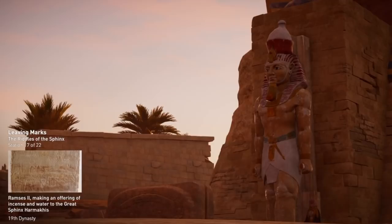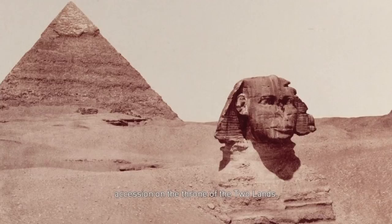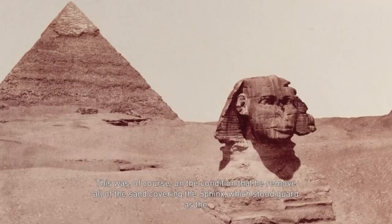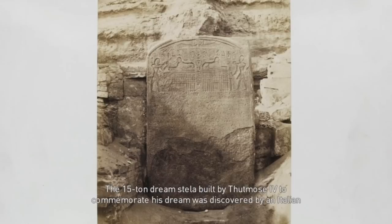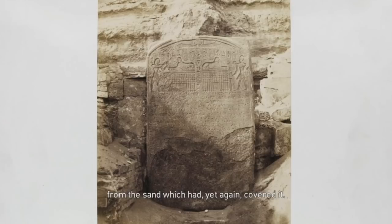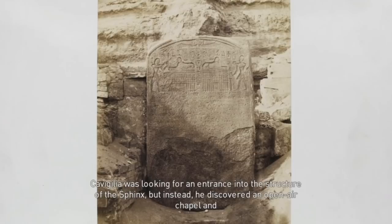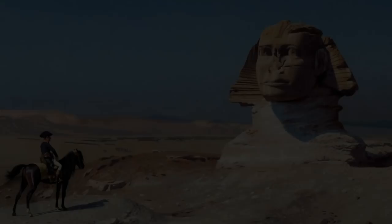Amenhotep II's son and successor, Thutmose IV, was a frequent offender. While sleeping between the sphinx's paws, the future Thutmose IV saw in a dream the god Horemakhet proclaiming his coming accession to the throne of the two lands — on the condition that he remove all of the sand covering the sphinx, which stood guard as the personification of the god. The 15-ton dream stela built by Thutmose IV to commemorate this dream was discovered by the Italian Egyptologist Giovanni Battista Caviglia in 1818, when he undertook the task of freeing the sphinx from the sand. Caviglia was looking for an entrance into the structure, but instead discovered an open-air chapel and stelas between the paws. Ashes from a ceremony were still present, possibly from the last ceremonies in Roman times.